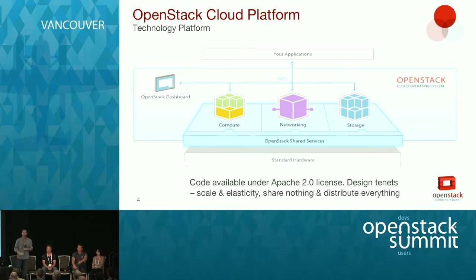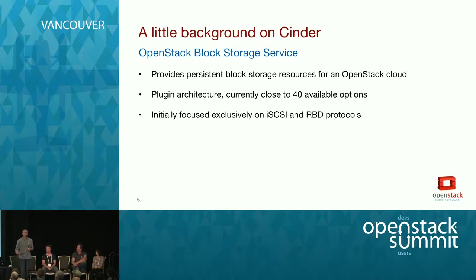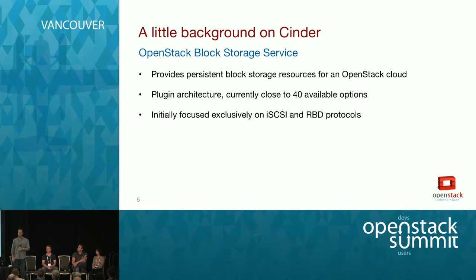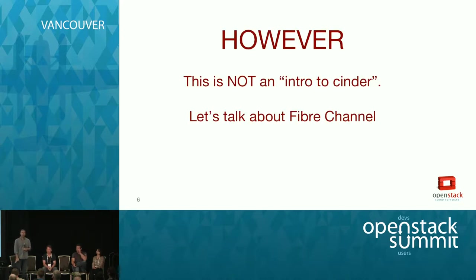Just a quick overview: OpenStack — there's the little diagram that everybody loves to show. Cinder is an OpenStack block storage service that provides persistent block storage for instances in an OpenStack cloud. It has a plug-in architecture, which is probably the most important point about Cinder. There are close to 40 available back-end drivers in the Kilo release. The initial focus historically was always iSCSI and RBD — up until a couple of releases ago, that was your only option.